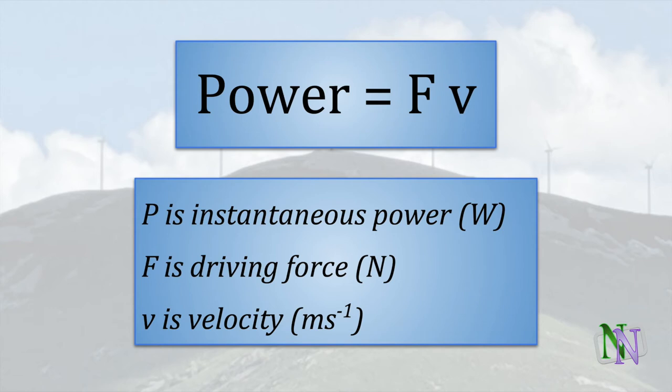Here is another formula for power, which is used in IB physics. It calculates the instantaneous power necessary to move at speed V with the driving force F. If the object is travelling at a constant speed, this must mean that an opposing force equal and opposite to the driving force is resisting the motion. Then the velocity and power are constant for the object.